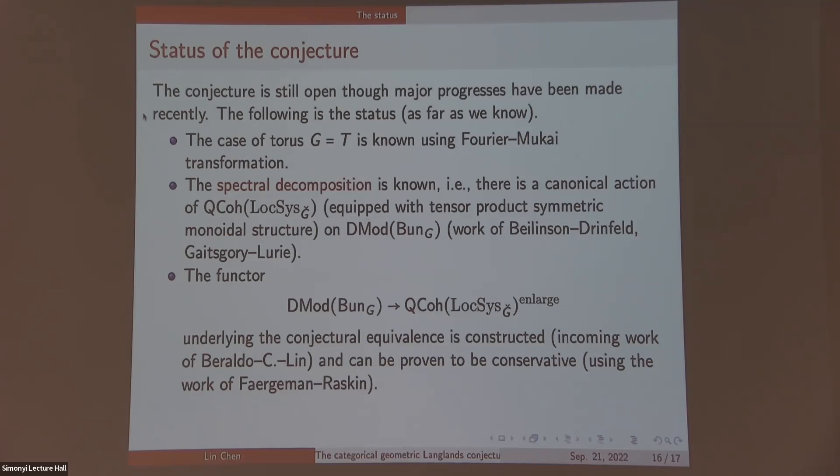And people can prove that this is conservative using a work of Faergeman-Raskin in this year. Roughly speaking, they proved that the functor from tempered part of this to Qcoh is conservative. And we proved that the gluing procedure of them are the same. Therefore, you obtain that this functor is conservative. But of course, you need some compatibility to construct this functor.